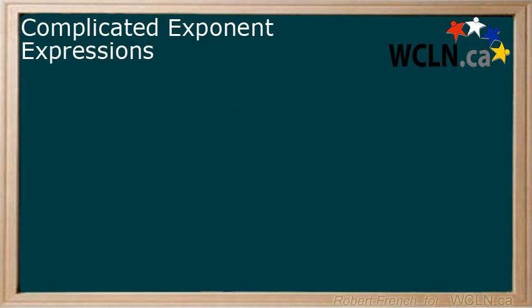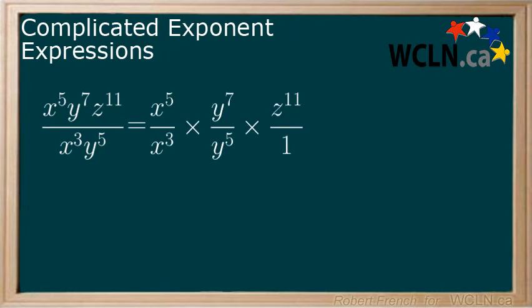Now let's look at our second example. If we separate these into separate fractions but multiplying each other, it might be easier to visualize what is going to happen next. First, we have x to the power of 5 over x to the power of 3, which gives us x to the power of 5 minus 3.